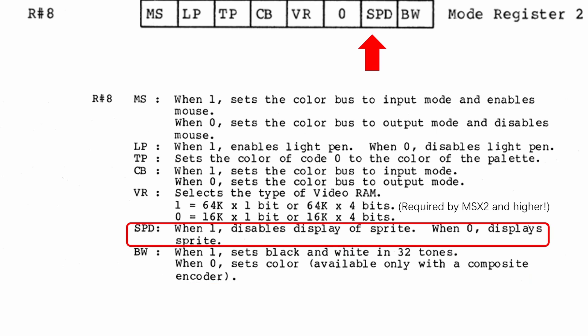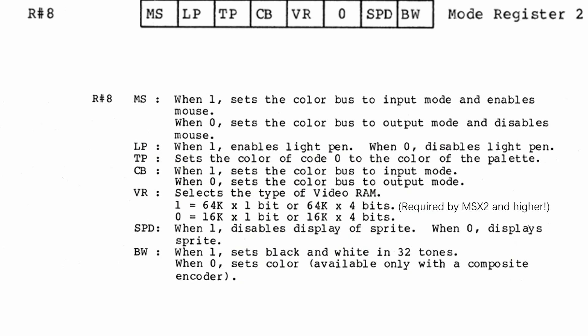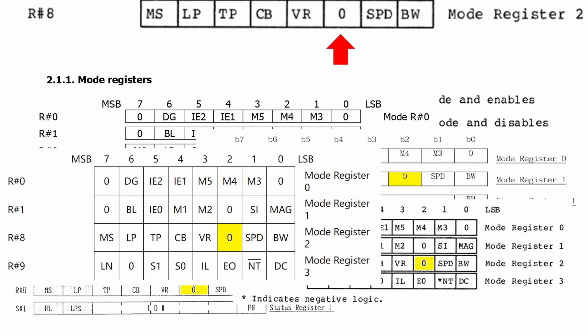The only interesting bit here is the SPD bit, which disables sprites. But as we discussed in the last video, it doesn't actually help with bandwidth that much, despite technically allowing a bit more time for the CPU and command engine to access VRAM. And there is bit 2, which needs no introduction, as it is 0 and must be set to 0 in all documentation I can find.